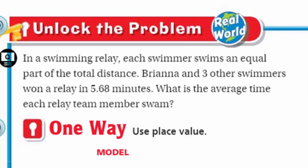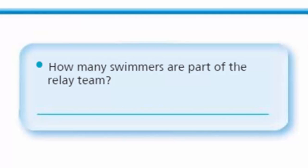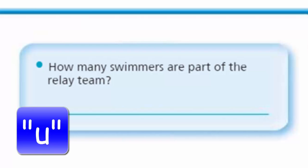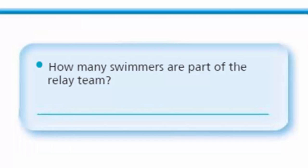So, if it's equal part of the total distance, this division should be coming to mind. But it does say Brianna and three other swimmers won it in this amount of time. So, it's almost like we're taking that time. If we're trying to find the average time each relay team member swam, each member of that team, then that average, we're going to take that 5.68 and divide that by the number of swimmers. In this case, this is how many swimmers are part of that relay team.